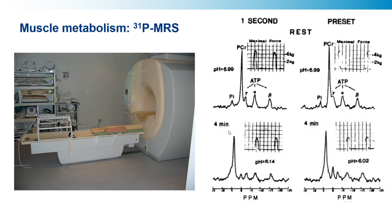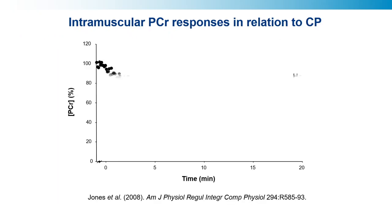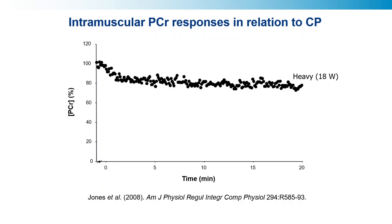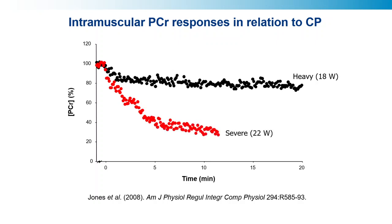Andy Jones essentially got people in a magnet doing knee extension exercise below and above the predetermined critical power, to find out what the metabolic responses would be. Here's what he found: in heavy exercise — 2 watts below the critical power — there is an initial depletion of phosphocreatine and then an approximate steady state is reached. Whereas above the critical power, there is a much greater decline in phosphocreatine, including a slow component-like drop, with end-exercise values far lower than during heavy intensity exercise.